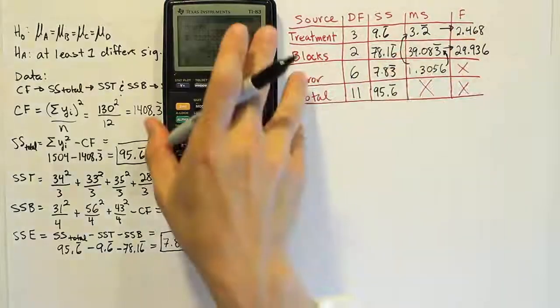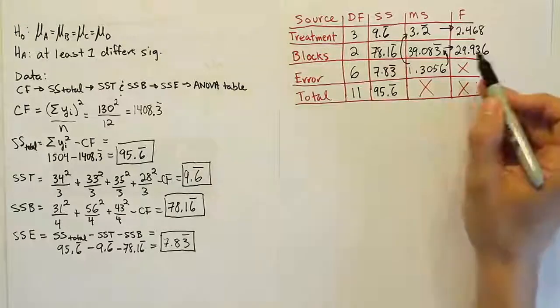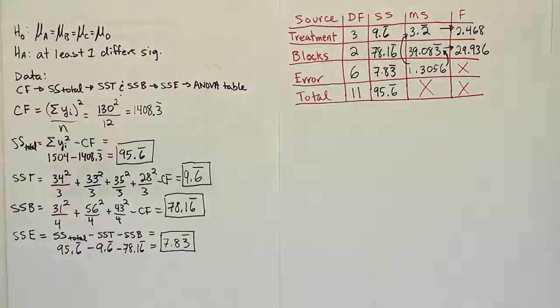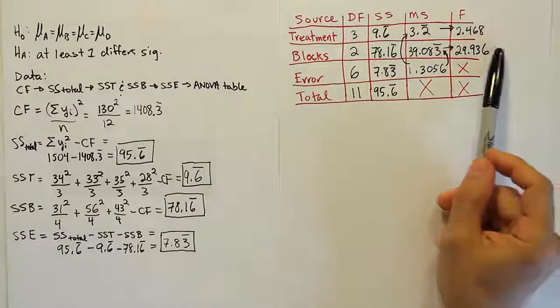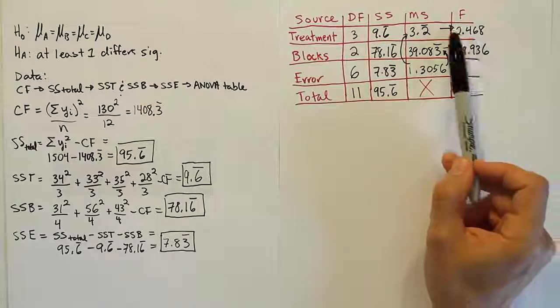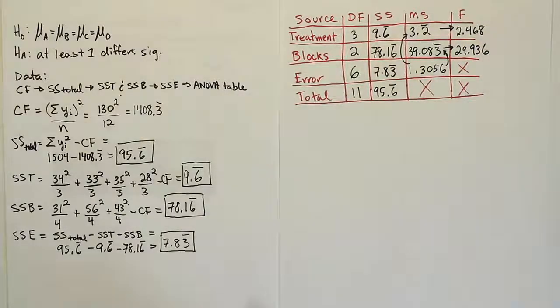So, you can see the blocks are highly significant, most likely, because that test stat is quite large. This might be why they chose to put the watering scheme as the blocks, because they may have already known that it was significant, and they may not have been interested in that as much as the fertilizers themselves.